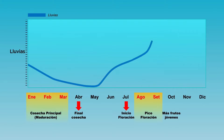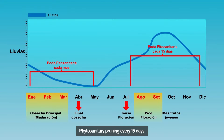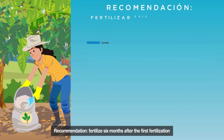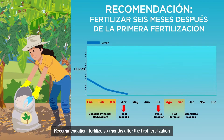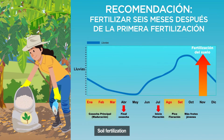As these fruits grow, phytosanitary pruning can be done every two weeks and then once a month in the months where there is less presence of young susceptible fruit. When there is presence of ripe fruit, phytosanitary pruning can be combined with the harvest. Six months after the first fertilization, it's necessary to fertilize the soil for a second time. This will help the fruits to better resist diseases in their maturation.